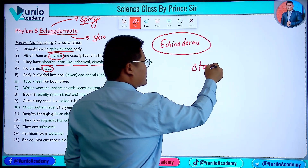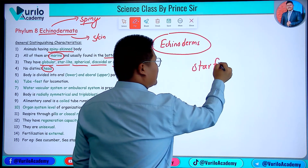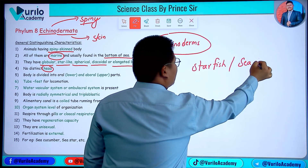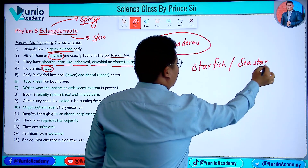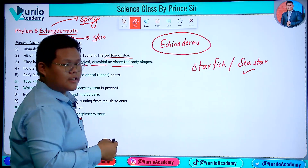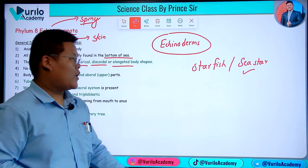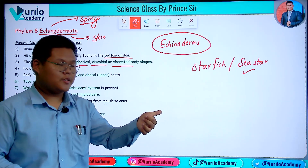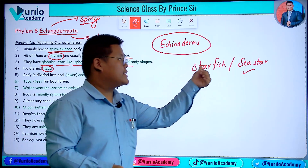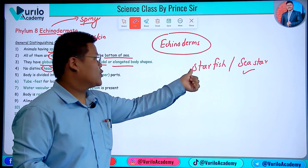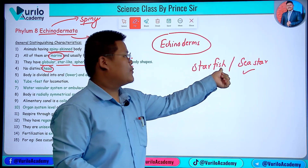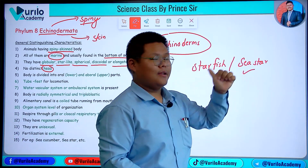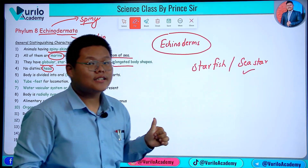The sea star is not a fish. It was previously called a starfish, but the name was changed to sea star. True fish belong to the Pisces class, so sea star is not a fish.